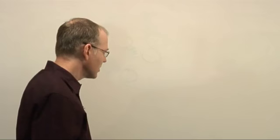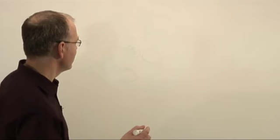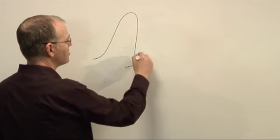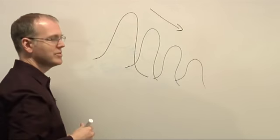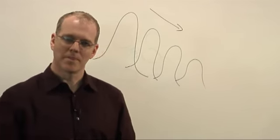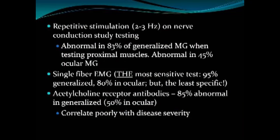EMG can be helpful for diagnosing myasthenia. We do what's called repetitive stimulation — stimulating a nerve two or three times per second while recording over a muscle. Normally the response shouldn't change. In myasthenia, we get a decremental response: as we give repetitive stimulation, the response gets lower. This is found in about 83% of patients with generalized myasthenia and about 45% of those with ocular myasthenia. A decremental response on the test points to myasthenia gravis.